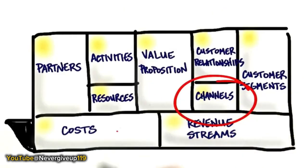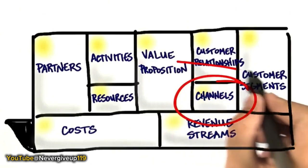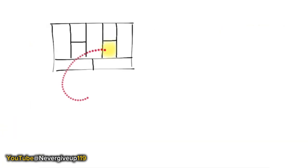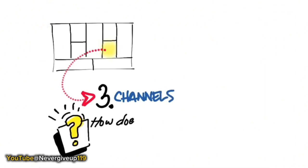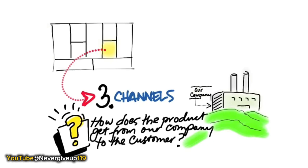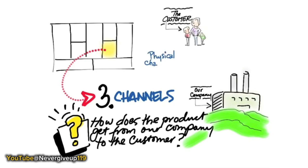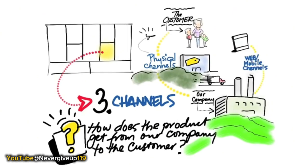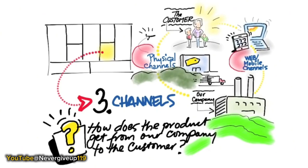Next are channels — how does your product get to your customers? We use distribution channels to do that. Pre-1990s, the only channels were physical: you went to a store, you had salespeople, there was physical distribution. Since the mid-1990s, we now have virtual channels — the web, mobile, cloud. The first question you want to ask is: how will I be selling and distributing my products? Are they through physical channels or web and mobile? Almost every physical channel also has a web presence today — what is the relationship of how your product gets from your company to the customers?